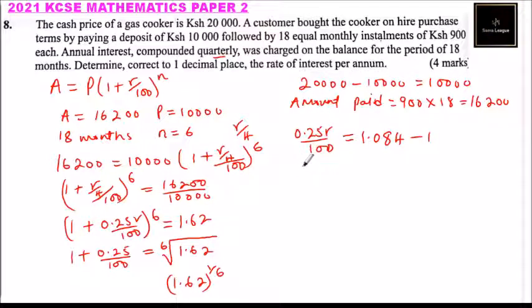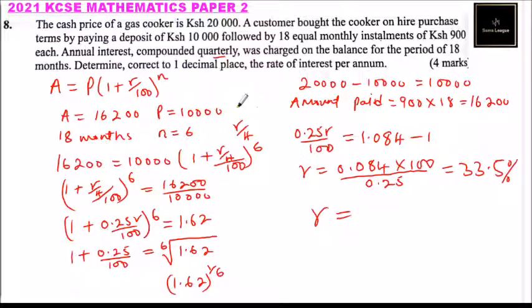So r equals 0.084 multiplied by 100 and divided by 0.25. If you do that calculation, you get 33.49. But because you're working to one decimal place, that is 3.5 percent. The rate of interest at which this amount was charged is 3.5 percent.